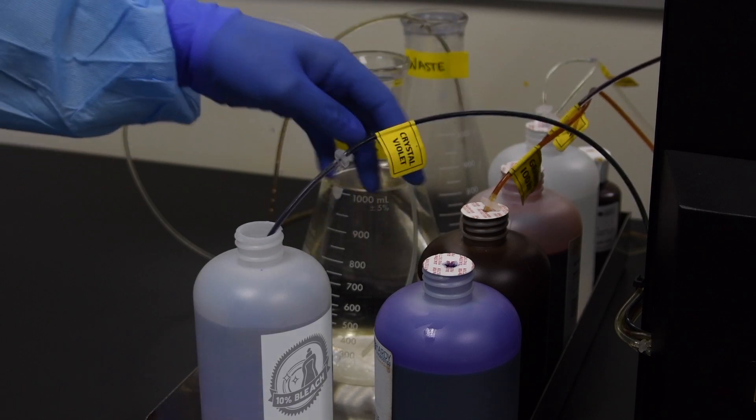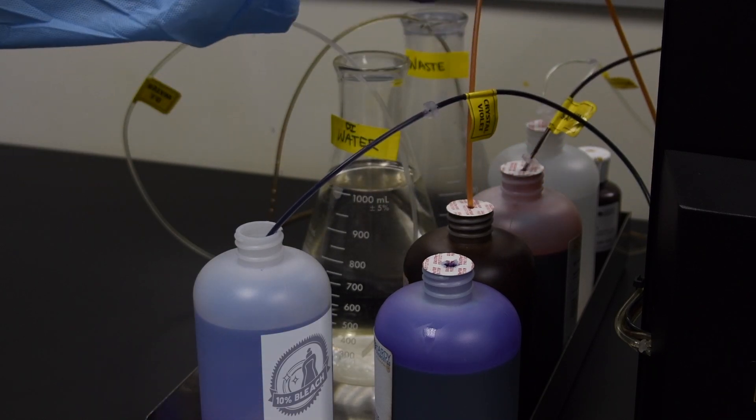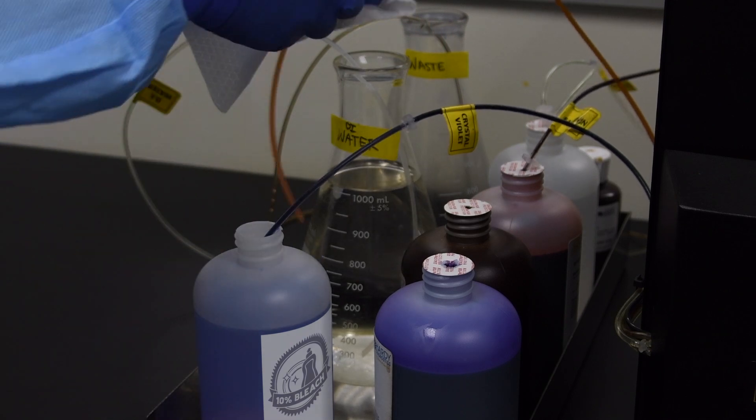For a bleach cycle, place all reagent cannulas into approximately 500 ml of a 10% bleach solution.